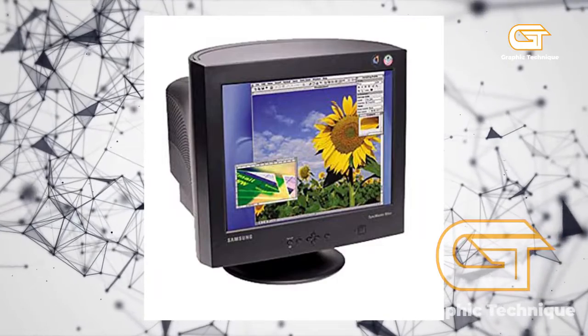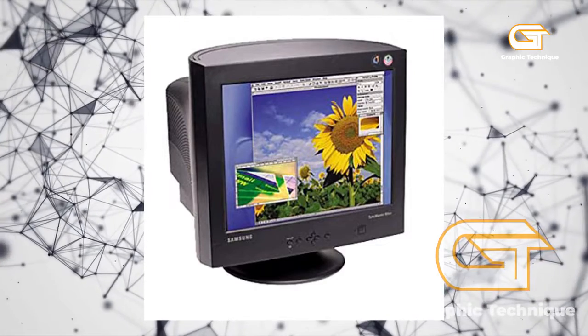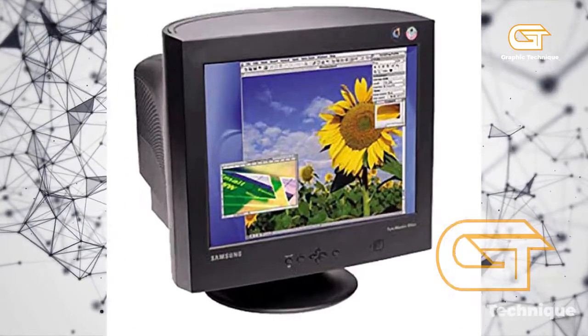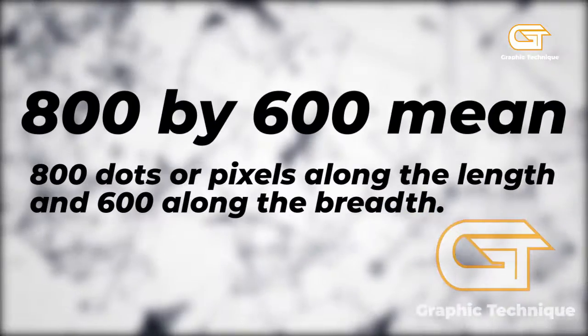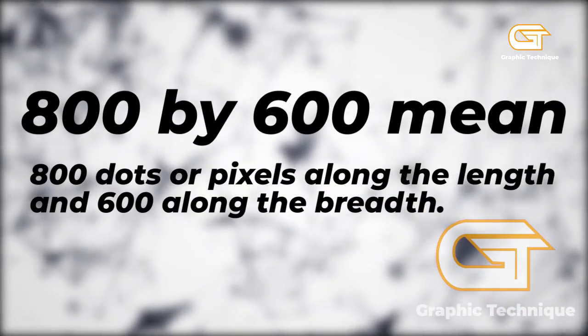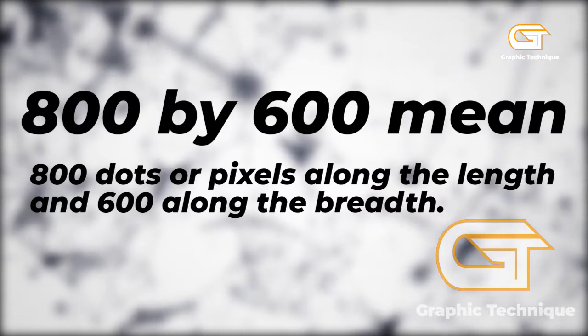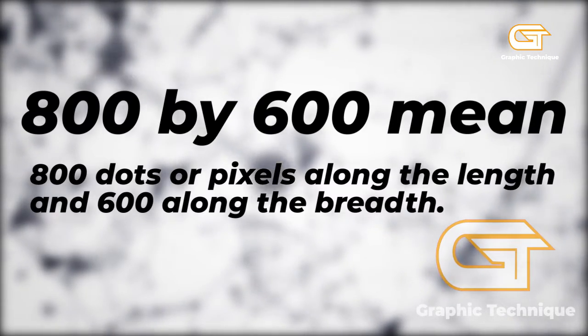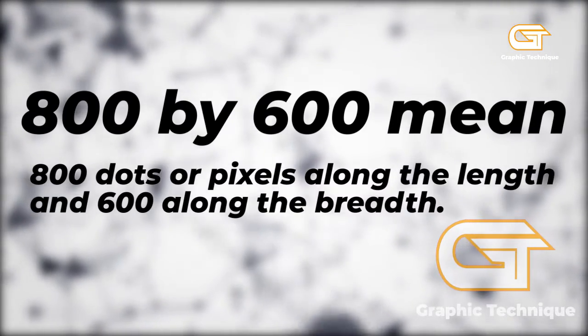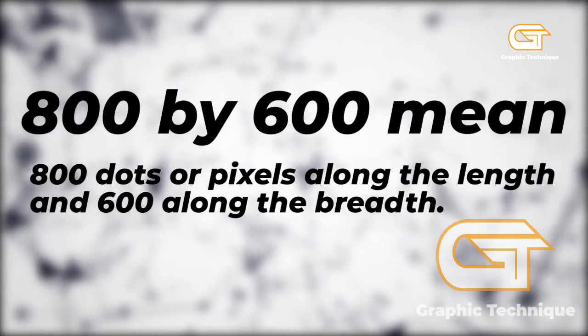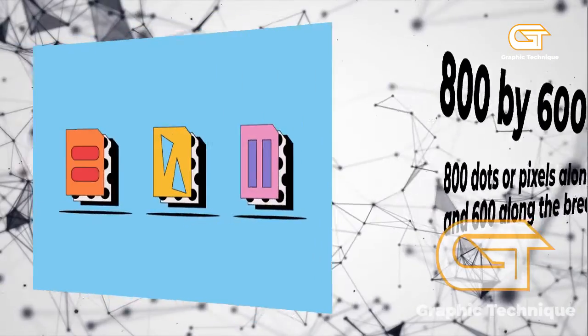Your monitor also specifies the number of dots across each length and breadth of the screen. Thus 800 by 600 means 800 dots or pixels along the length and 600 along the breadth.